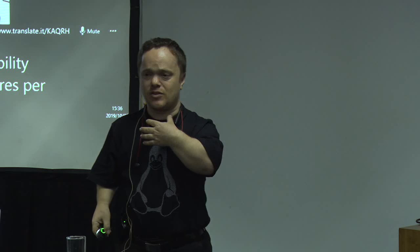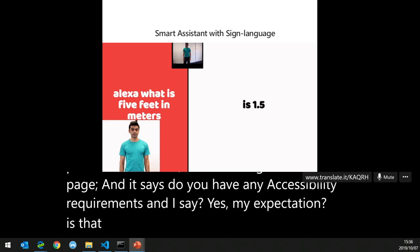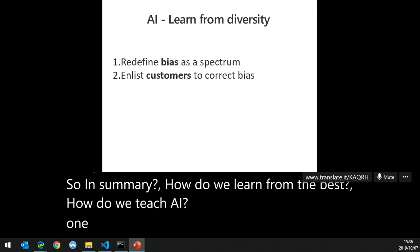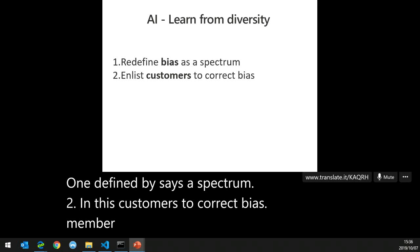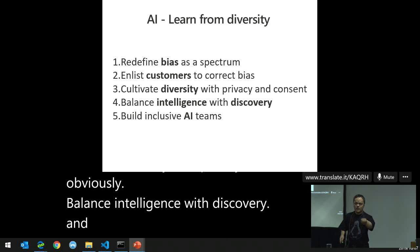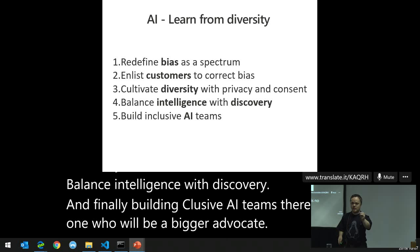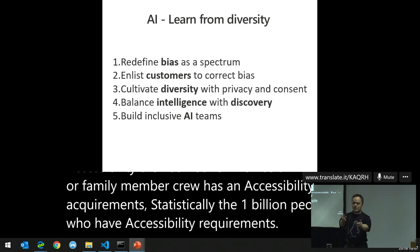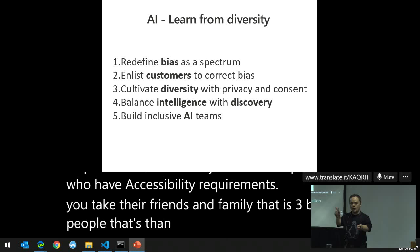When I log into a web page and say I have accessibility requirements, my expectation is that the entire journey molds to my unique criteria. In summary, to teach AI: one, define bias as a spectrum; two, enlist customers to correct bias — you are right now training DeepMoji; three, cultivate diversity with privacy and consent; four, balance intelligence with discovery; five, build inclusive AI teams. Statistically there are one billion people with accessibility requirements — with friends and family, that's three billion, half the world's population.